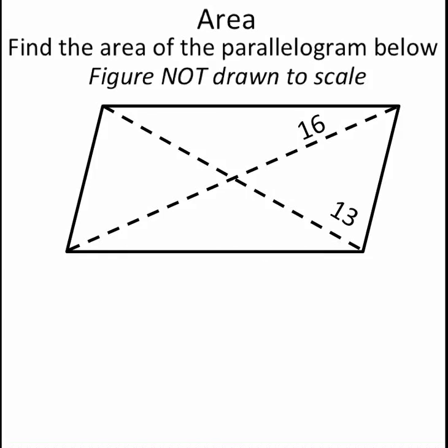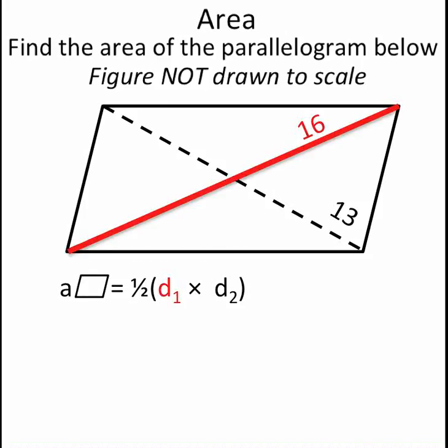The second formula for the area of a parallelogram is 1 half times the product of its diagonals, or 1 half times diagonal 1 times diagonal 2. When I look at this problem, I have values for both diagonal 1 and diagonal 2.